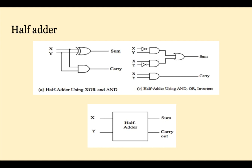On the left, we see a half adder using exclusive OR and AND. On the right, using AND, OR, and inverters. We can conceal the implementation details with a block diagram.